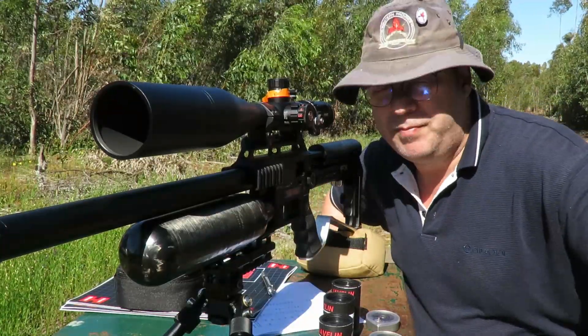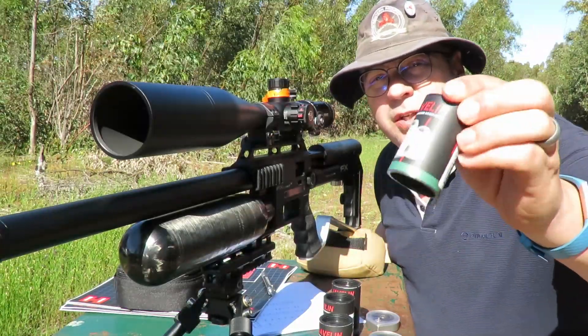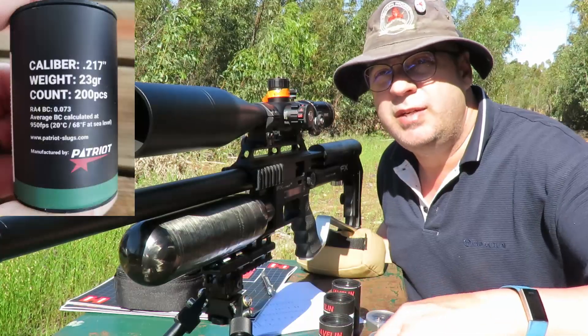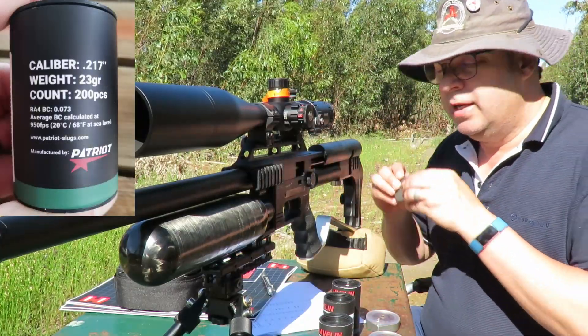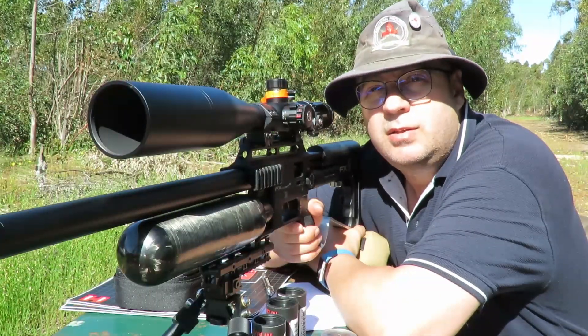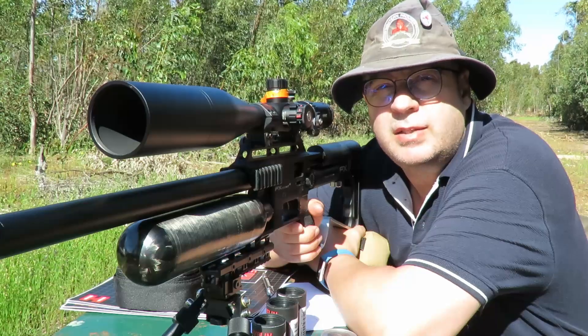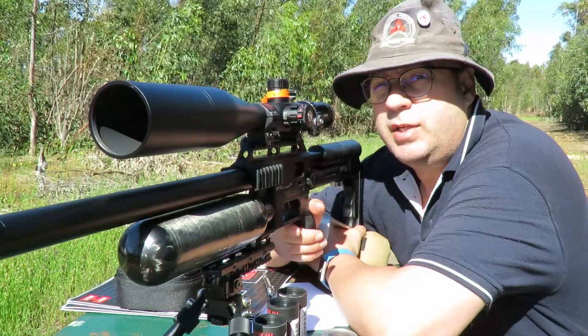All right, so next up I'm gonna shoot the Javelins 23 grains in 217. Just a few sighters again and then we're gonna do it. Okay, Javelins 23 grains, power setting four, running about 990 feet a second, and we're gonna go for 10 shots top left.